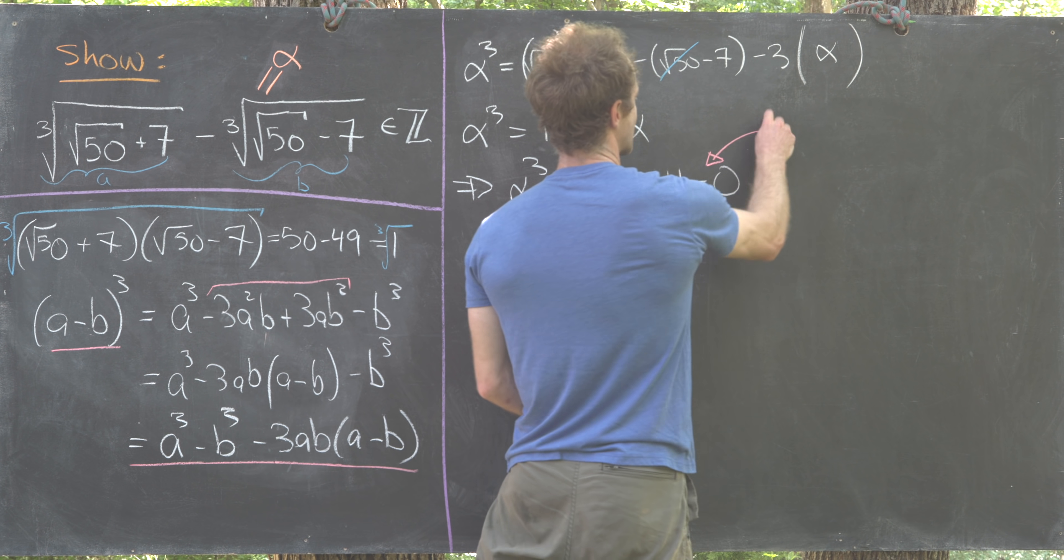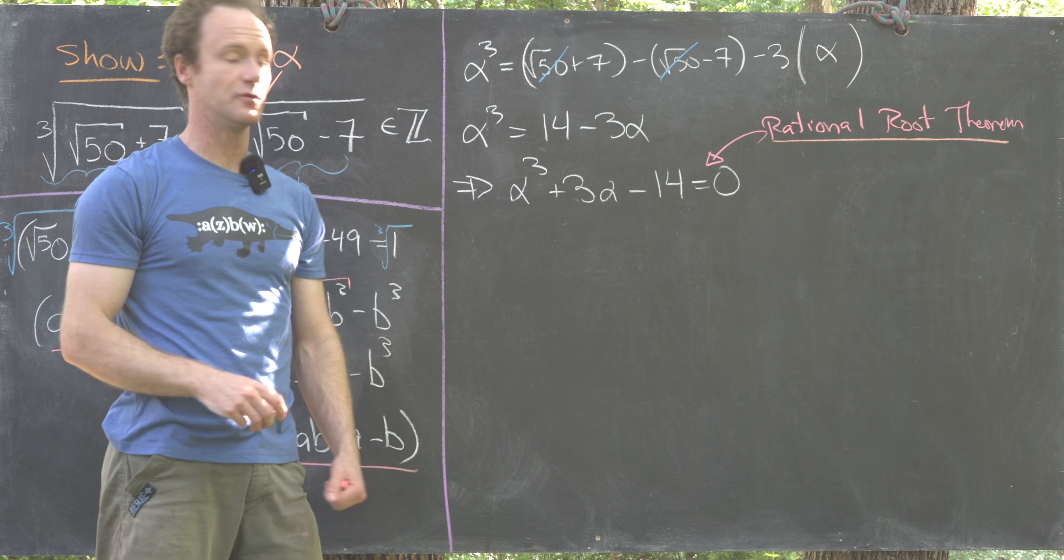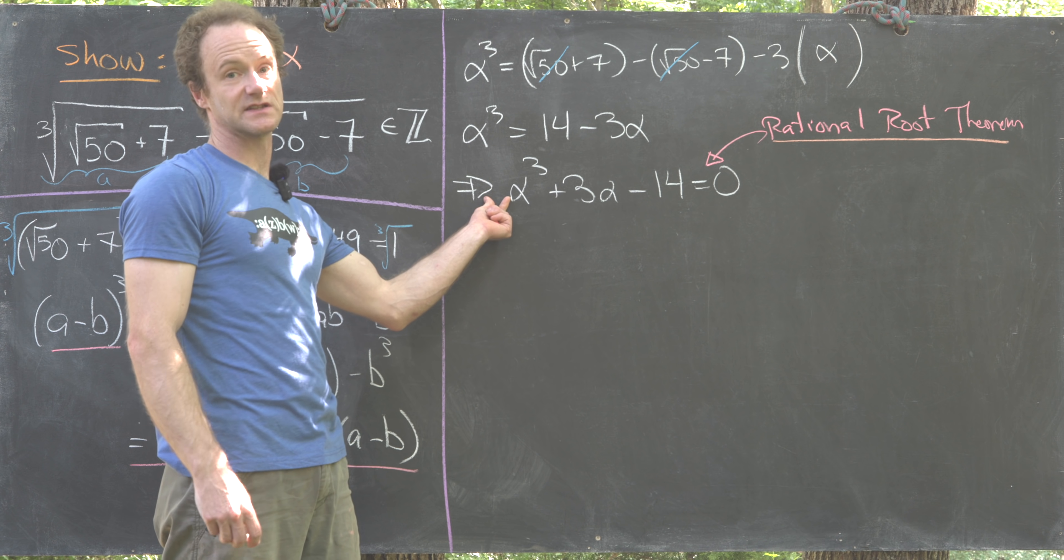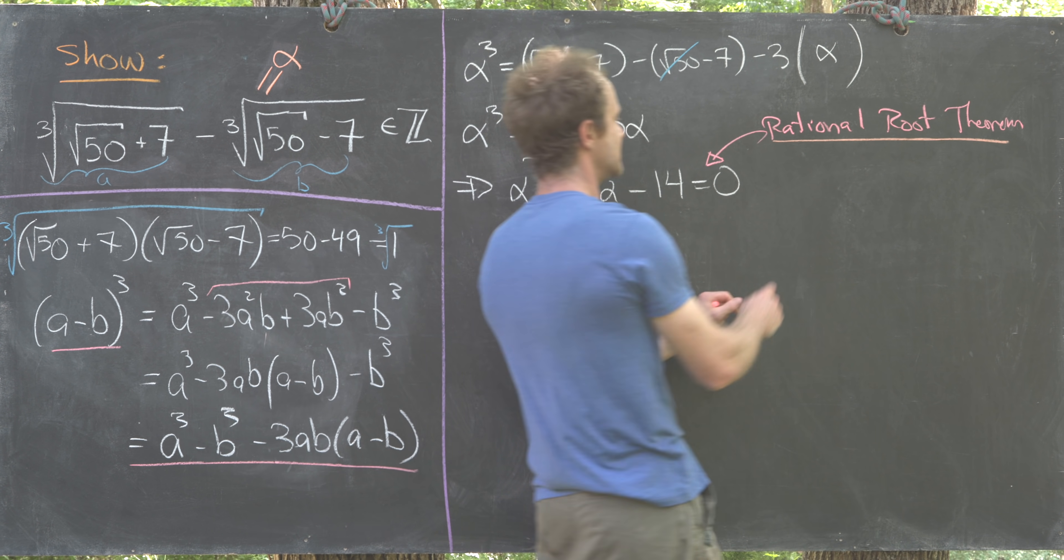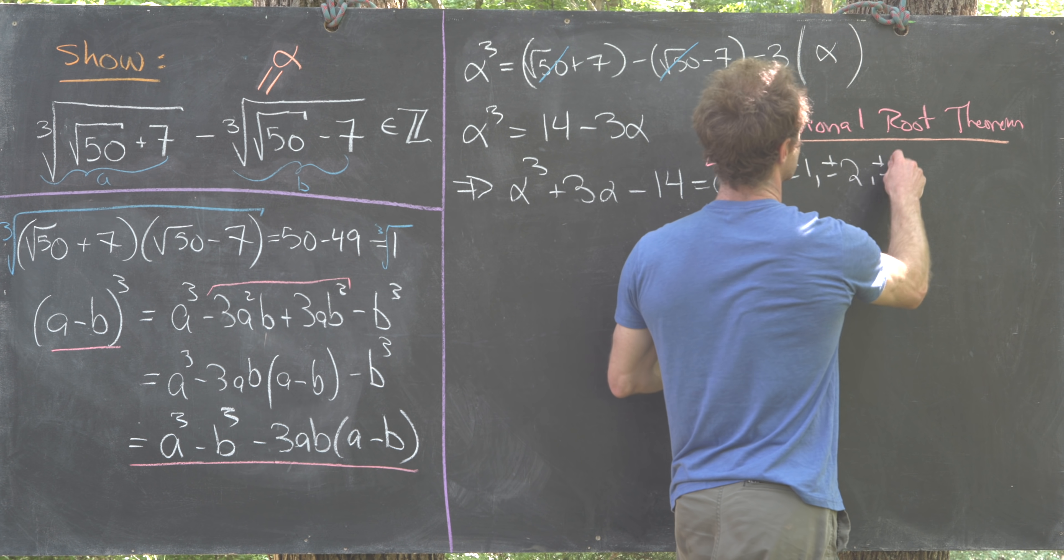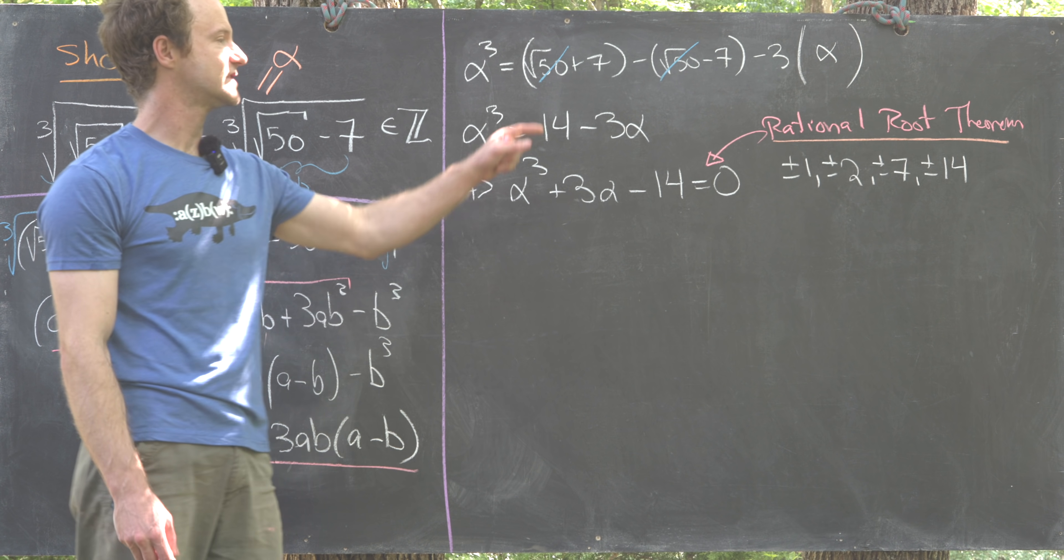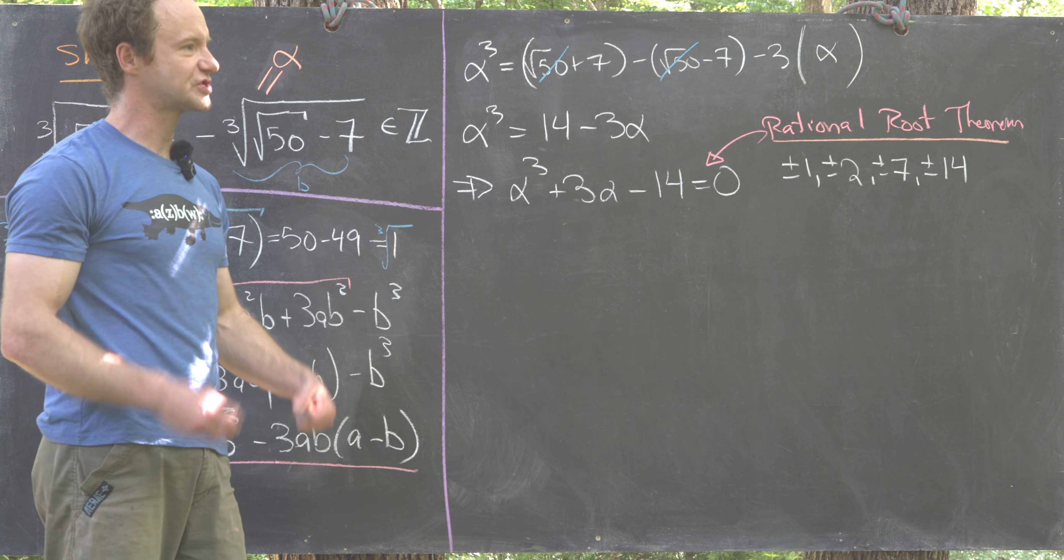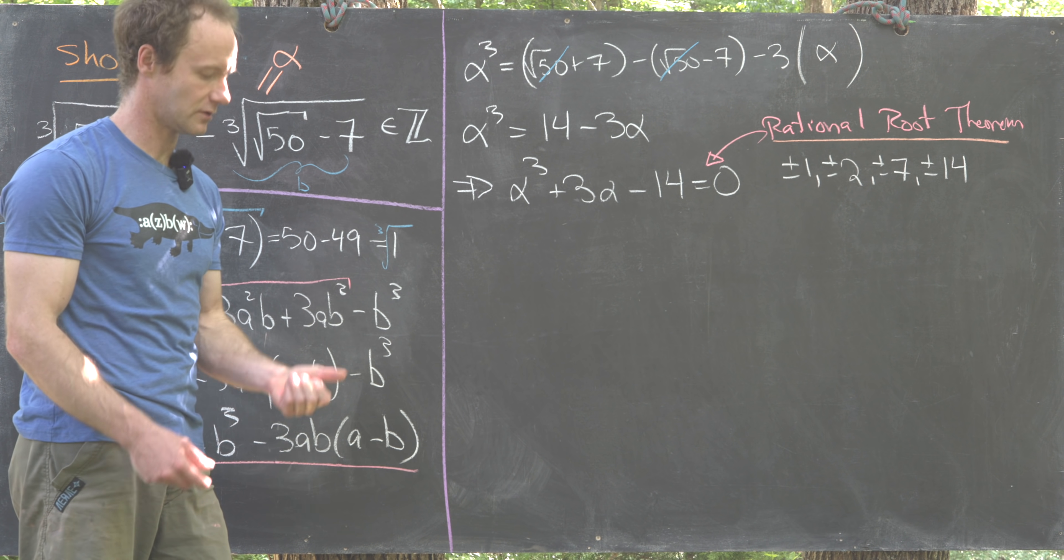By the rational root theorem we know the possible rational roots for this cubic are all the factors of 14 divided by all the factors of this leading coefficient which is 1, then we take plus or minus all of those. That's going to be plus minus 1, plus minus 2, plus minus 7, and finally plus minus 14. We'll take turns plugging those eight numbers into this cubic expression and whichever one gives us 0 tells us a linear factor that we can pull out.